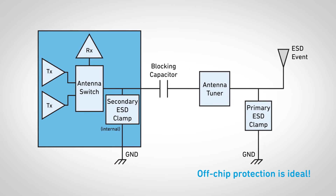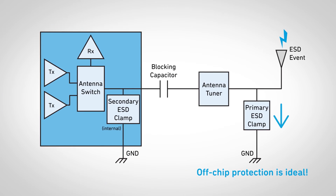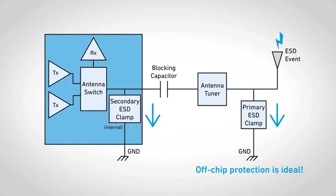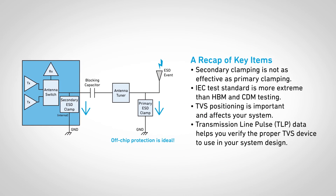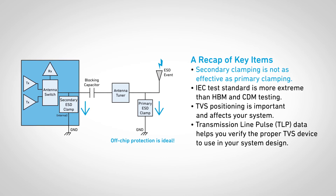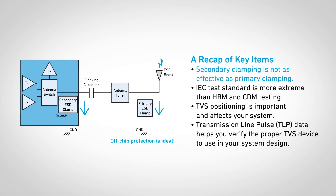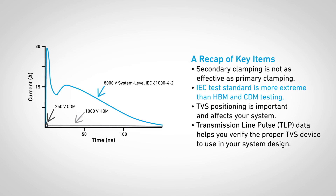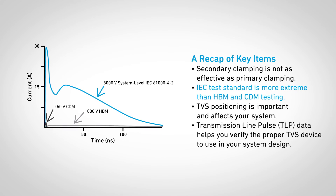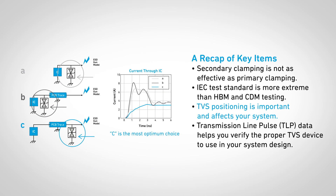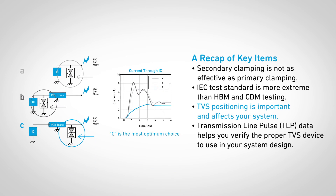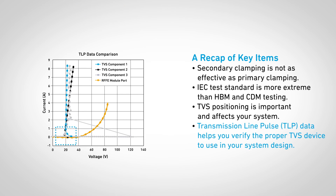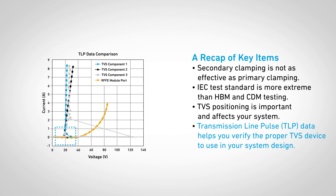Following the SEED methodology will make it more likely you meet IEC ESD testing with fewer design cycles. To recap: secondary clamping is not as effective as primary onboard clamping. The IEC 61000-4-2 testing is the hardest ESD test to pass. TVS positioning is more effective when placed close to the antenna. Transmission line pulse data is used to verify the optimum device.